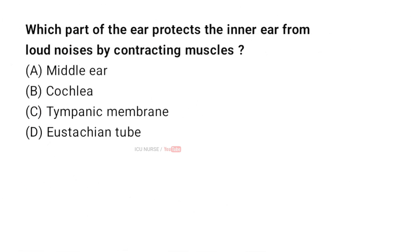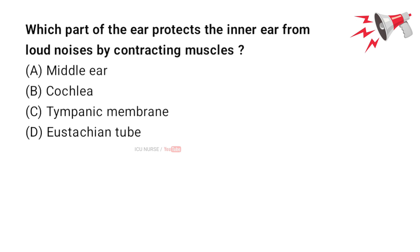Which part of the ear protects the inner ear from loud noises by contracting muscles? A. Middle ear, B. Cochlea, C. Tympanic membrane, D. Eustachian tube. And the correct answer is A. Middle ear.